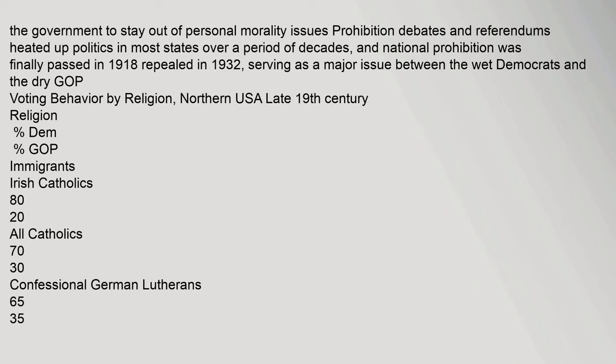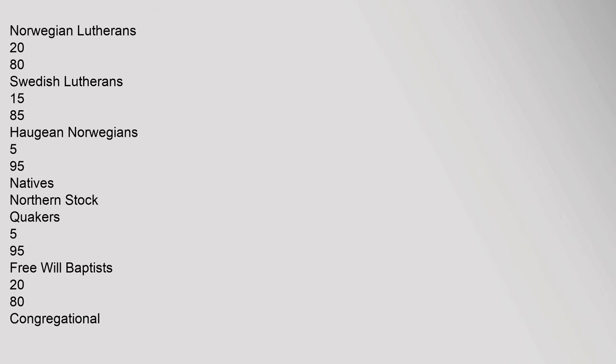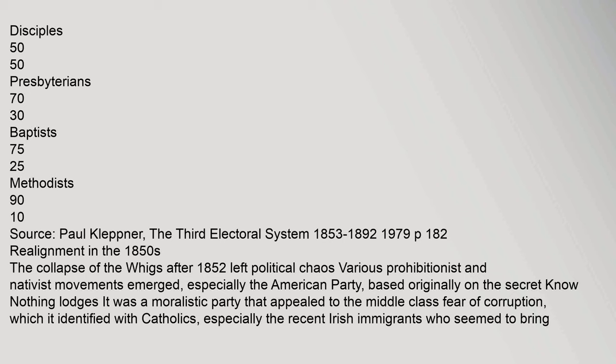Voting behavior by religion, Northern USA, late 19th century: German Reformed 60-40 Democratic; French Canadian Catholics 50-50; less confessional German Lutherans 45-55; English Canadians 40-60; British stock 35-65; German sectarians 30-70; Norwegian Lutherans 20-80; Swedish Lutherans 15-85; Quakers 5-95; Free Will Baptists 20-80; Congregational 25-75; Methodists 25-75; Regular Baptists 35-65; Blacks 40-60; Presbyterians 40-60; Episcopalians 45-55. Source: Paul Kleppner, The Third Electoral System 1853–1892, 1979, p. 182.